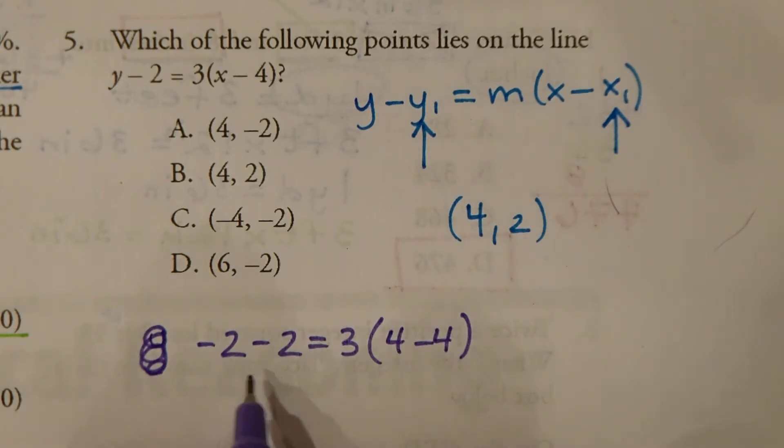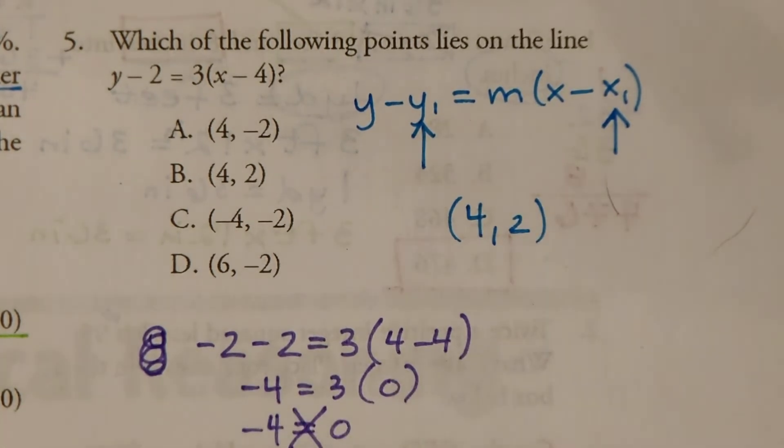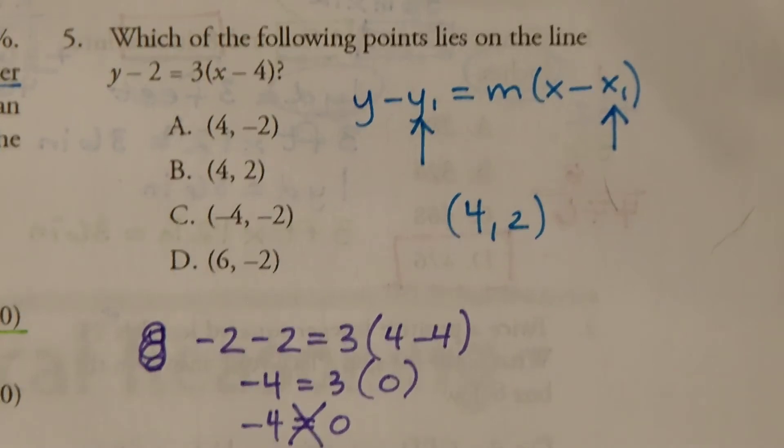So, this is going to be negative 4 equals 3 times, 4 minus 4 is 0. So, negative 4 equals 0. Nope, that does not work. So, we need to keep trying.